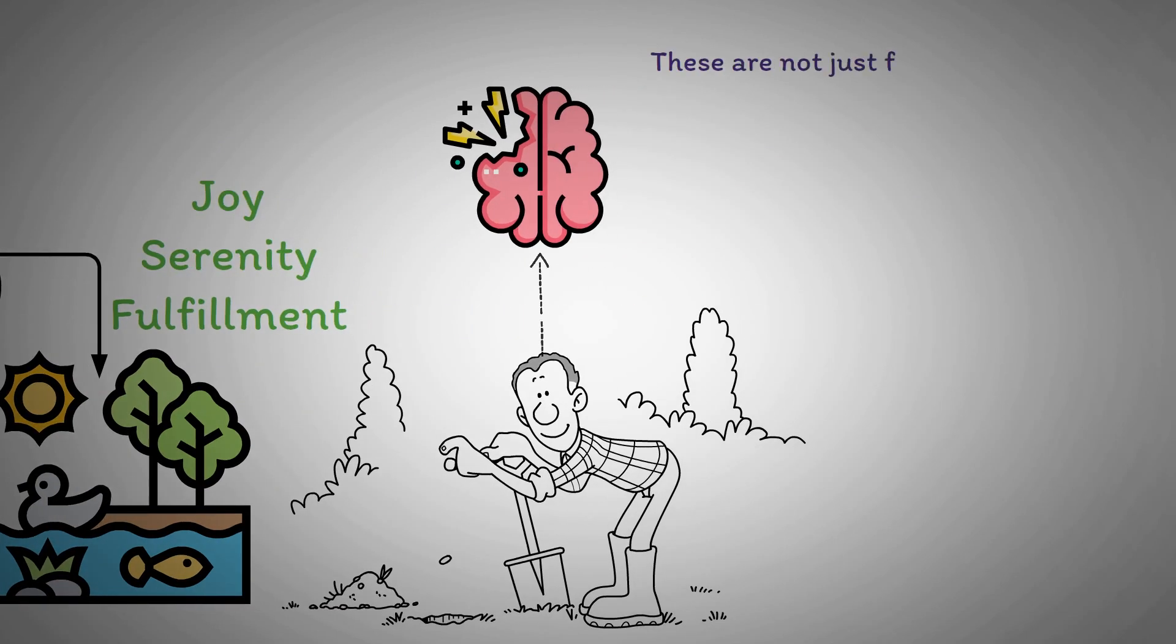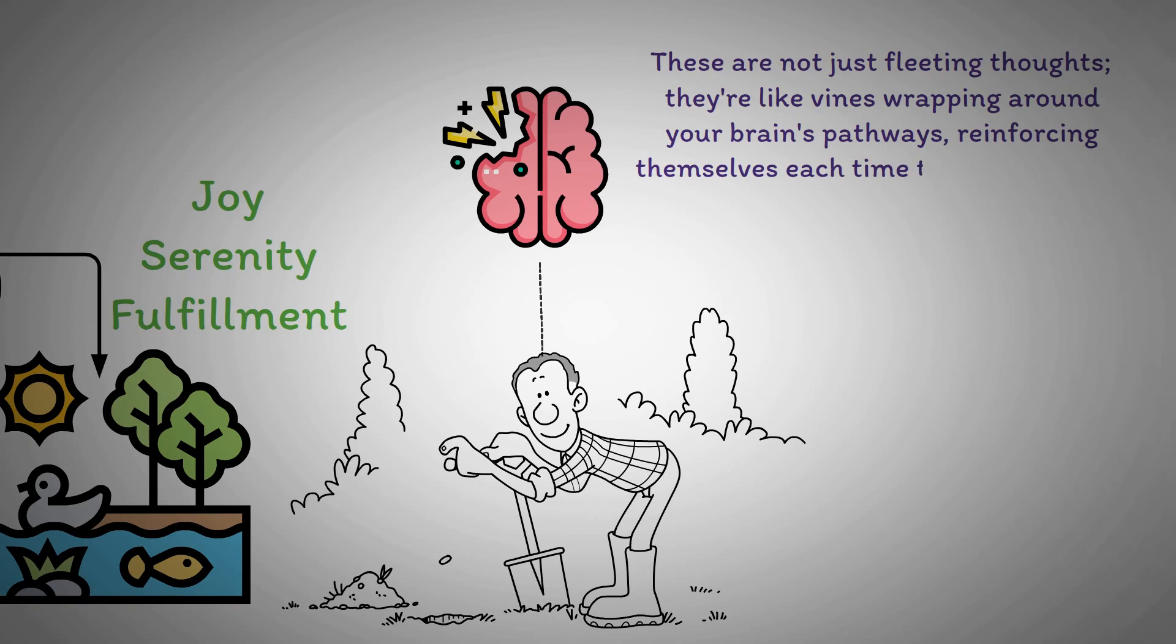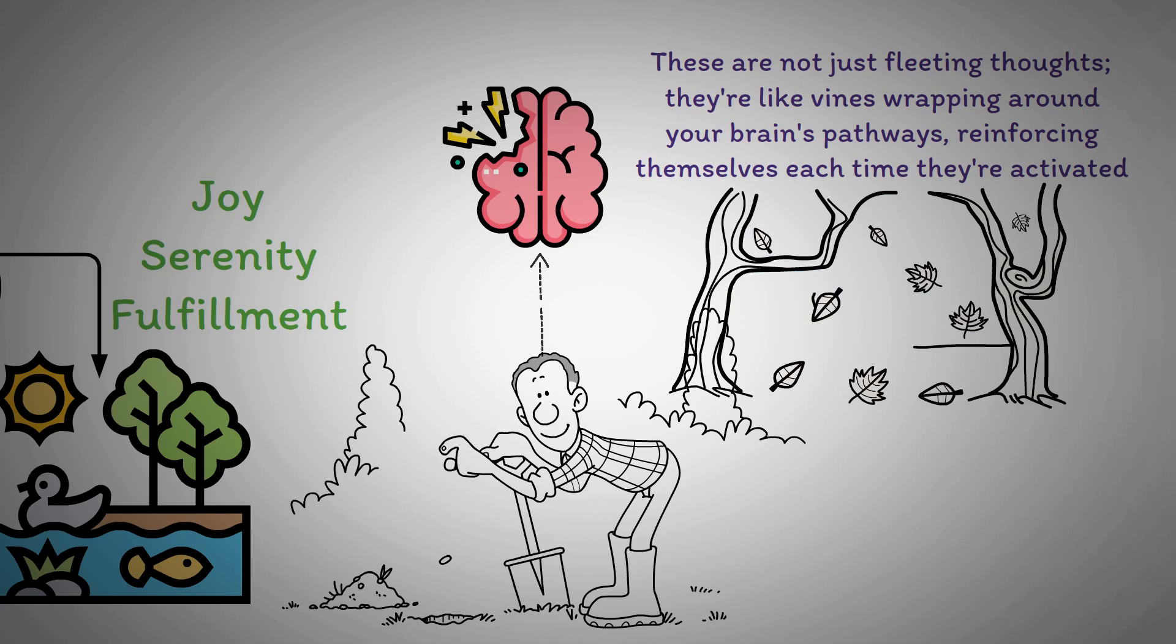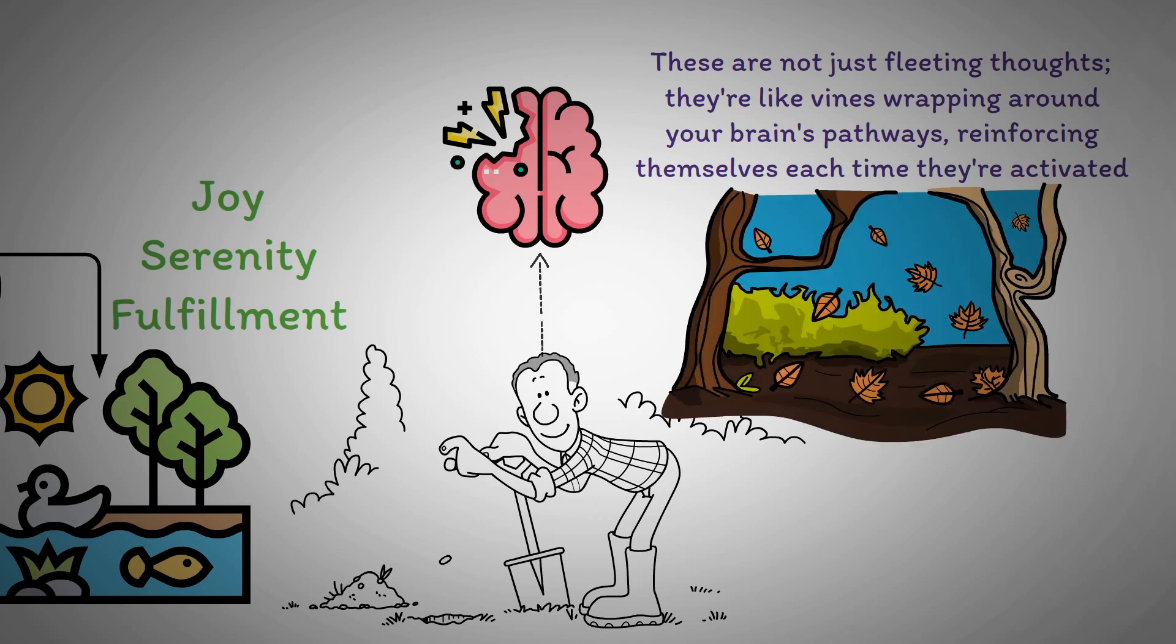These are not just fleeting thoughts. They're like vines wrapping around your brain's pathways, reinforcing themselves each time they're activated. Now, imagine these weeds growing thicker and spreading further each day, overshadowing the vibrant flowers and plants that represent your joy, creativity, and positivity.